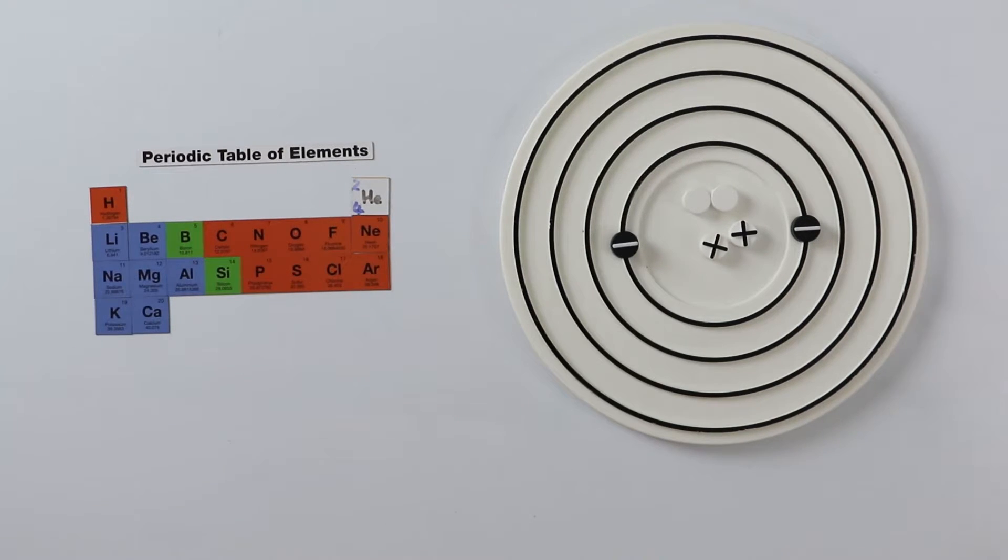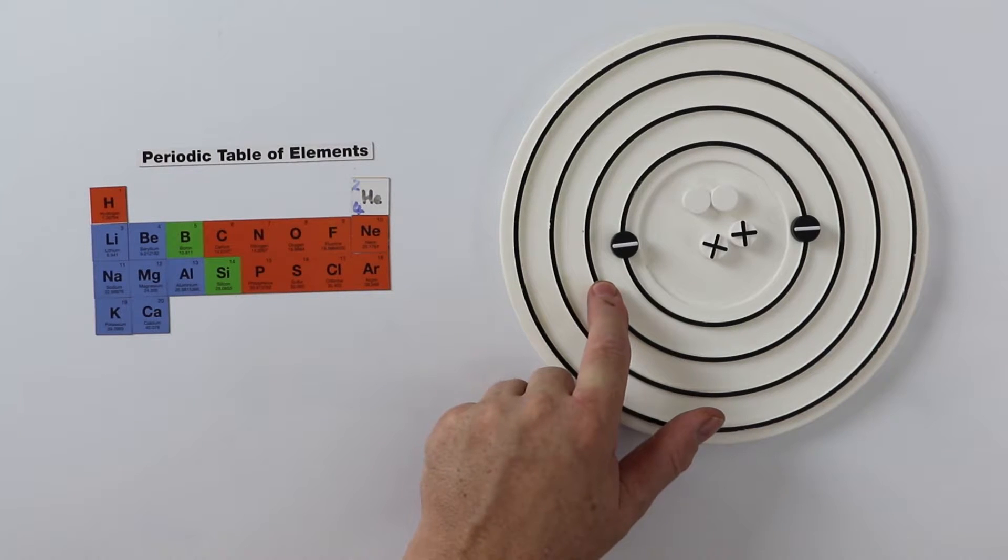We have moved across the first row or period of the periodic table. The first layer or shell is now complete. When we start adding electrons now, we must start in the next layer.